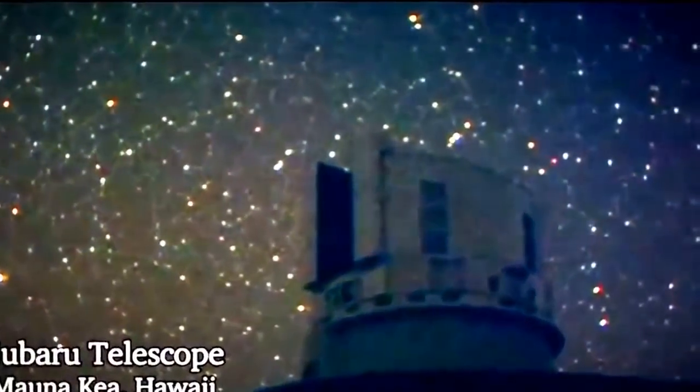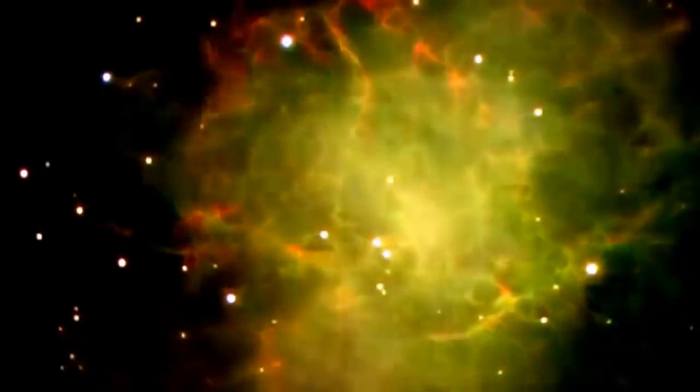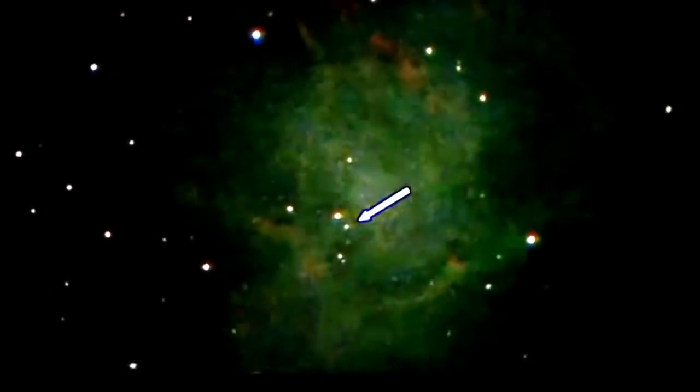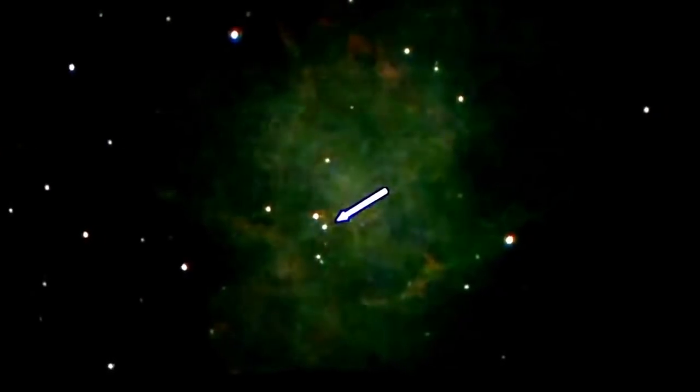In 1999, the Subaru telescope at the summit of Mauna Kea in Hawaii was aimed at the Crab Nebula. Observe the object indicated in the middle. Here it is in slow motion. Something is twinkling, flashing, unlike any of the stars around it. A pulsar.